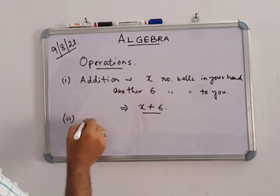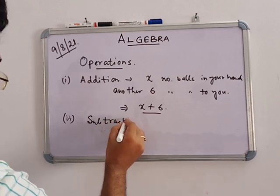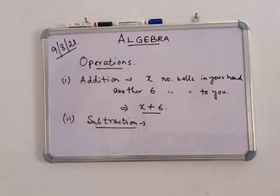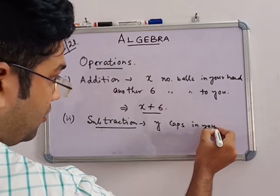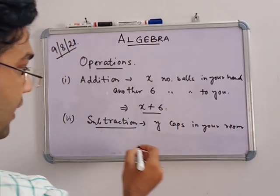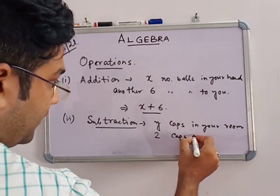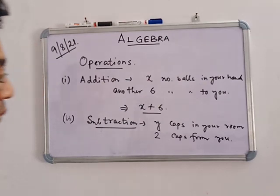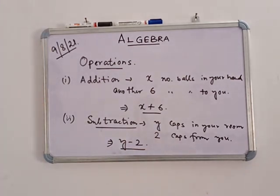Number 2 is subtraction. In subtraction, suppose you have Y caps in your room. Your friend takes 2 caps from you. Then how many caps do you have? You have Y minus 2 caps. Total caps you had were Y, your friend took 2, so the result is Y minus 2 caps.